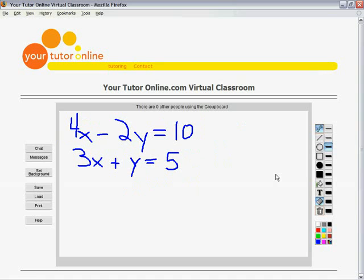Sometimes a variable will not already be isolated or by itself. So you have to work with an equation to get one of the variables by itself. In this example, the second equation could easily be turned into one where y is all by itself, if we just subtract 3 from both sides. So it becomes y is equal to negative 3x plus 5.